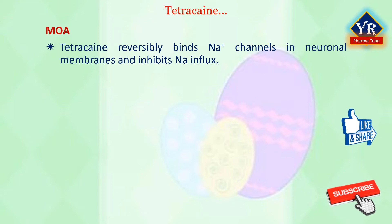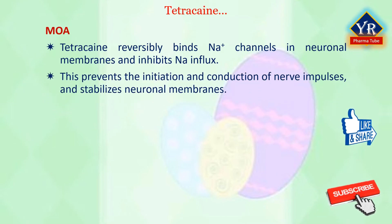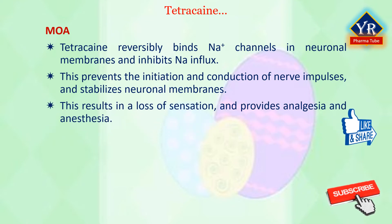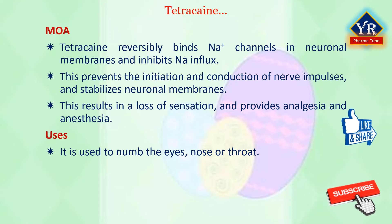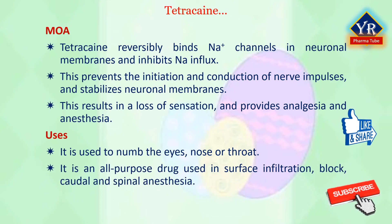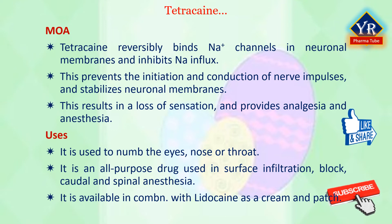Tetracaine reversibly binds voltage-gated sodium ion channels in neuronal cell membranes and inhibits sodium influx. This prevents the initiation and conduction of nerve impulses and stabilizes neuronal membranes, resulting in a loss of sensation and thereby providing analgesia and anesthesia. Tetracaine is used to numb the eyes, nose, and throat. It may also be applied to the skin before an intravenous injection to decrease pain. It is an all-purpose local anesthetic used frequently in surface infiltration, block, caudal, and spinal anesthesia. It is reported to be 10 times more toxic and more potent than procaine, while its duration of action is twice that of procaine. It is available in combination with lidocaine as a cream and patch.